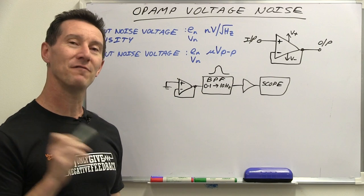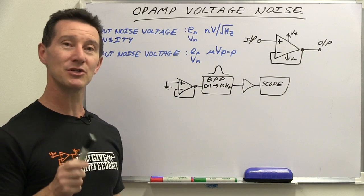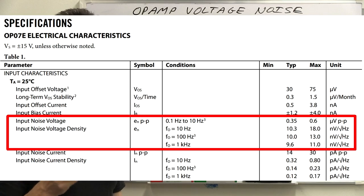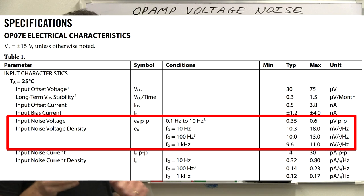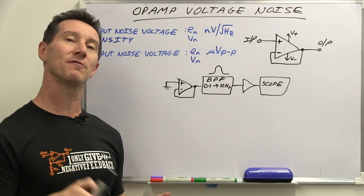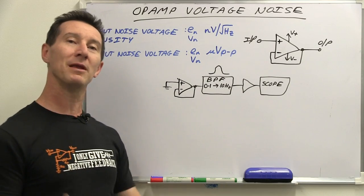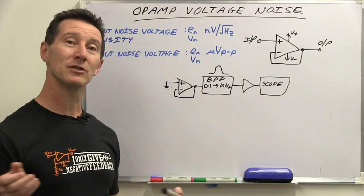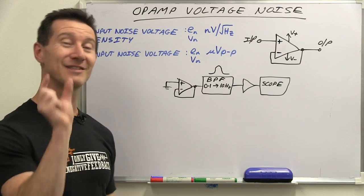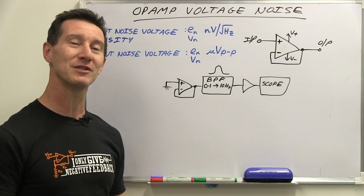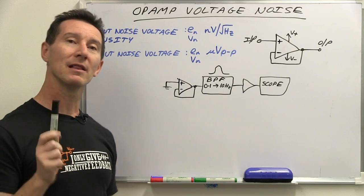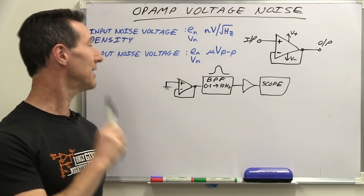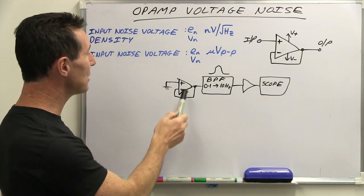Take a look at the conditions that value is measured over — it's actually 0.1 Hz to 10 Hz bandwidth. You might be familiar with this from power supply specs, for example. They might specify the output noise of your bench lab power supply over, typically, a 20 MHz bandwidth. Well, in this case it's a very small, low-frequency bandwidth, and we'll find out why later. It's 0.1 Hz to 10 Hz — this is typically how they measure it.